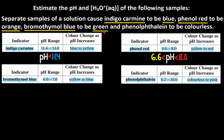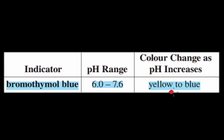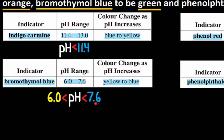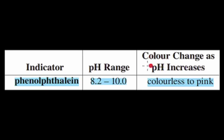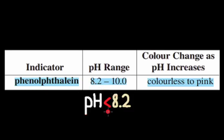It also tells us that bromothymol blue is green. The color change for bromothymol blue is yellow to blue. Green is a mix of yellow and blue, so the pH is between 6.0 and 7.6 — the pH is greater than 6.0 but less than 7.6. Finally, it tells us that phenolphthalein is colorless. The color change is colorless to pink — colorless is on the left side and 8.2 is on the left side. So for phenolphthalein to be colorless, the pH has to be less than 8.2.